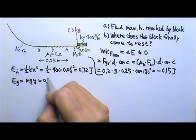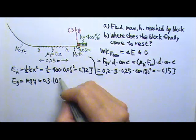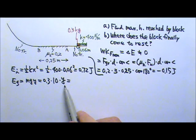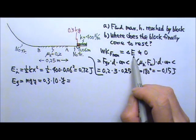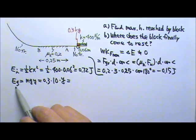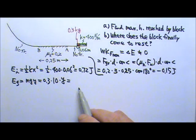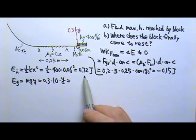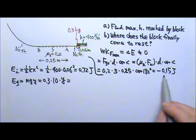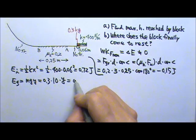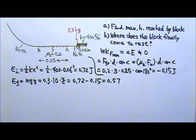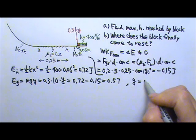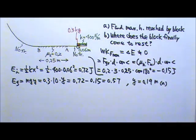And this equals to m, 0.3 times, I'm going to use 10 for g, and we don't know y, we're looking for y. We can set negative 0.15 joules to equal to the E final minus the E initial, or we can just use the idea of conservation of energy. The system starts with 0.72 joules of energy. Friction takes away 0.15, so how much is left at the end? It's 0.72 minus 0.15, so we have 0.57 joules left. And this equals to 0.57. We can find y to be 0.19 meters. So this is the answer for part A.